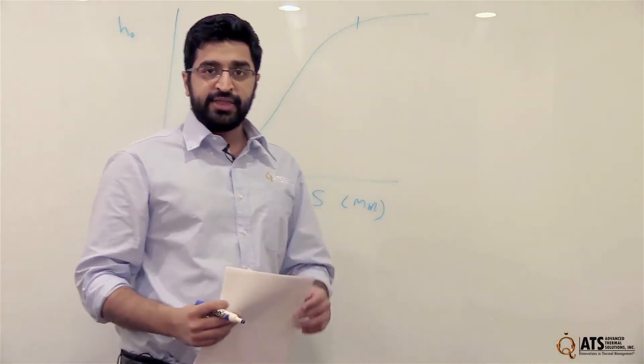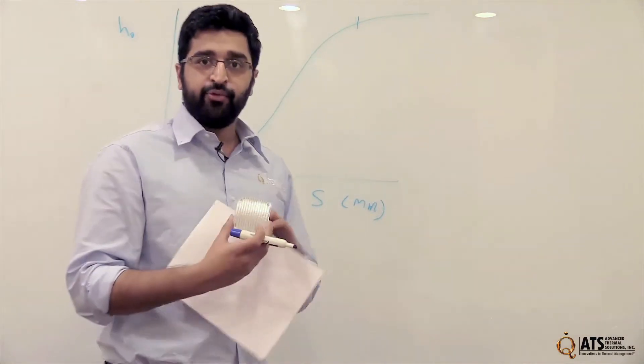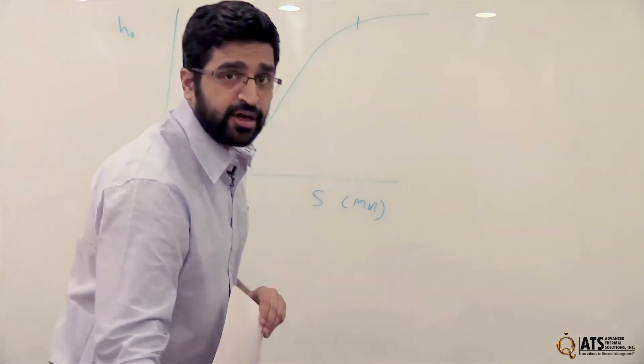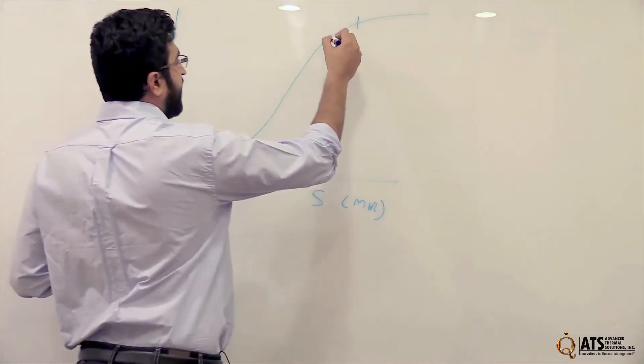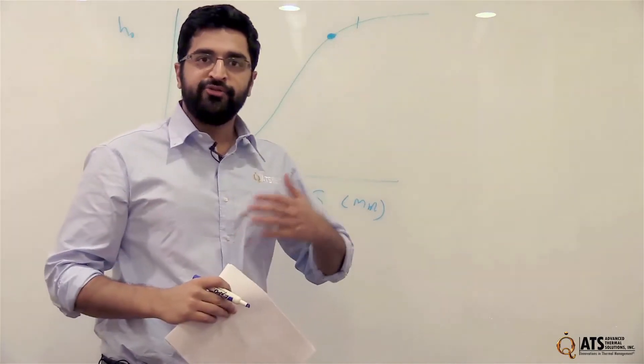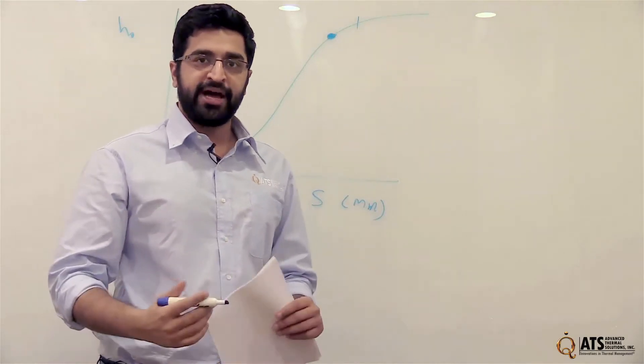And if you can imagine a heatsink that only has a certain amount of width, like this one, you can get an optimal number of fins that would be somewhere here, where you've increased the heat transfer coefficient to a certain amount, but still want to fit in the most number of fins possible.